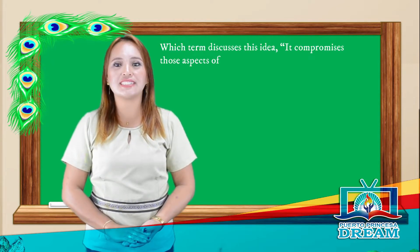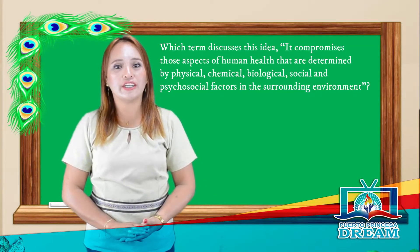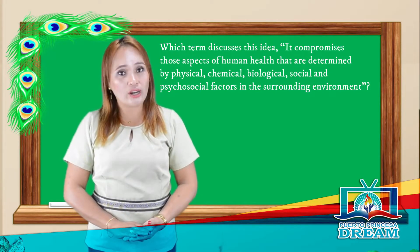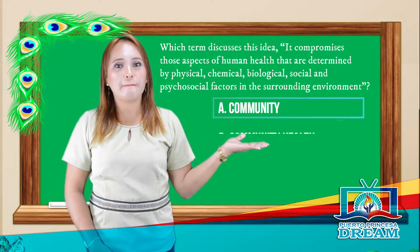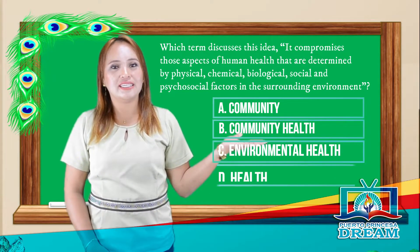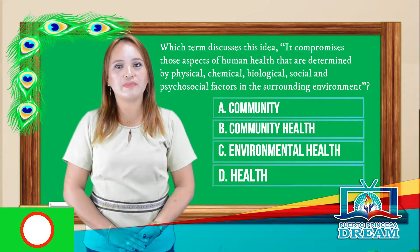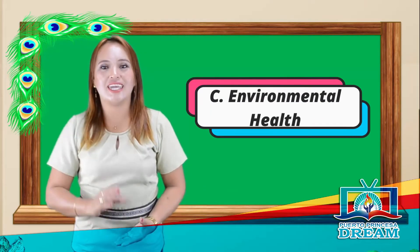Next question. Fitchter discusses this idea and it comprises those aspects of human health that are determined by physical, chemical, biological, social, and psychosocial factors in the surrounding environment. A. Community, B. Community health, C. Environmental health, D. Health. Time is up! The right answer is letter C.